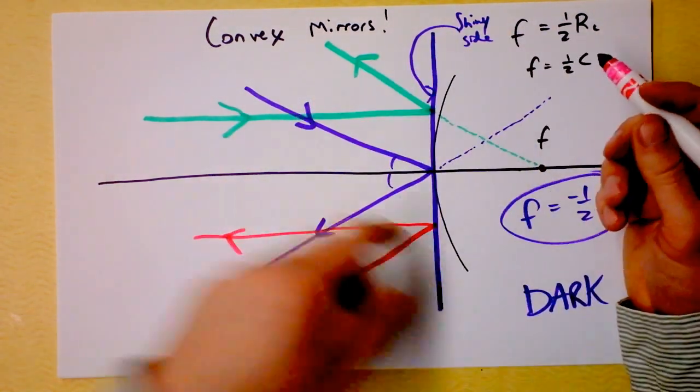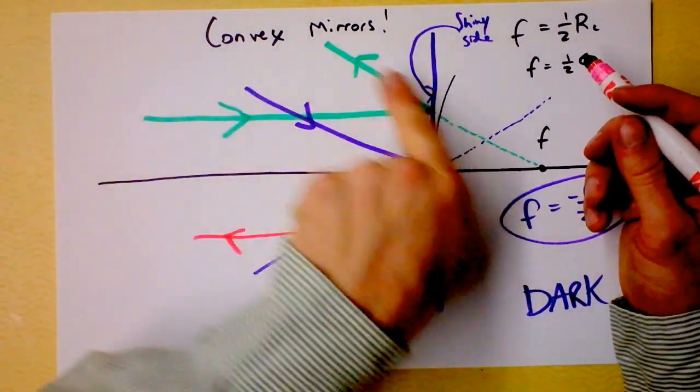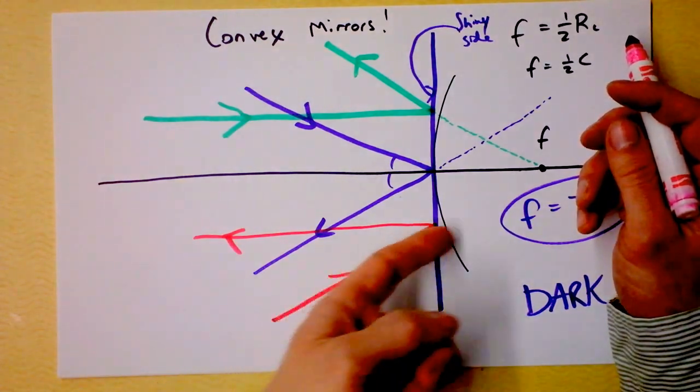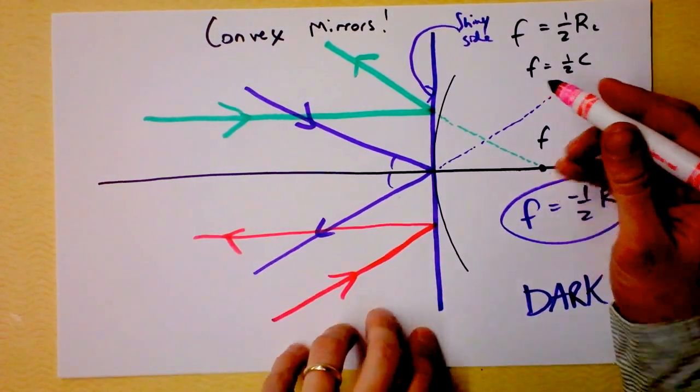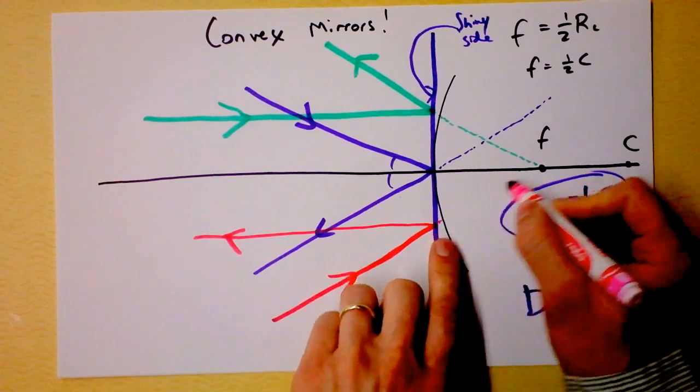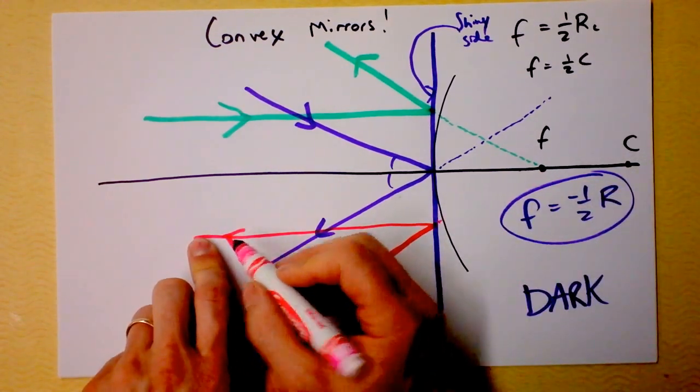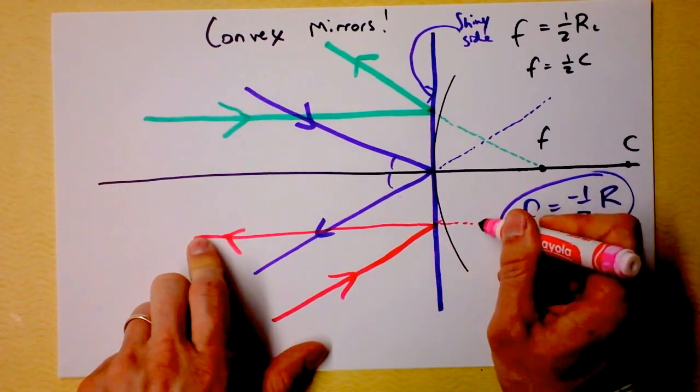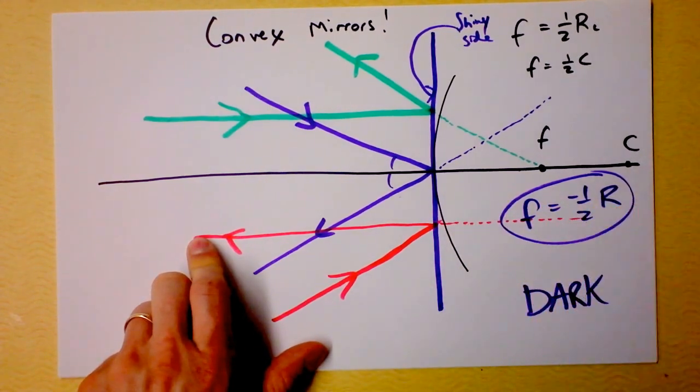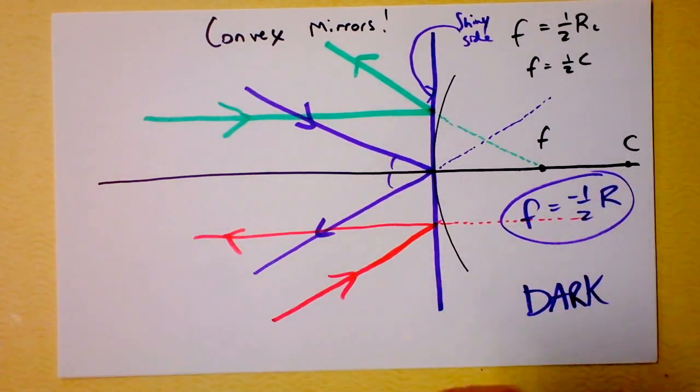it will leave parallel. So these rays are kind of opposites of each other. This one that's coming in parallel leaving as if it came from the focus, this one actually going towards the focus and leaving parallel. Watch this. The dotted line here doesn't go to the focus. The dotted line shows where it looks like it came from. This dotted line goes right here because it looks like that ray of light came from right there.